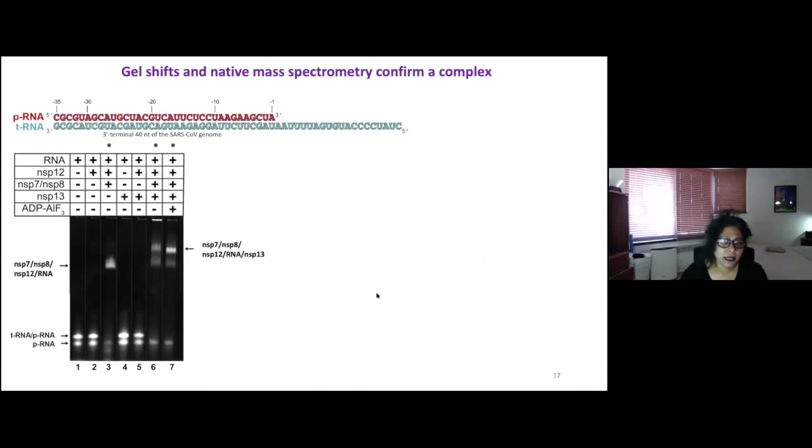So Eliza did a gel shift assay, just a very old fashioned simple assay here, where she took the RTC. Here you're seeing the holo RDRP with RNA, and then she added NSP13, and she saw a shift. So that shift indicates that a larger complex was being formed.